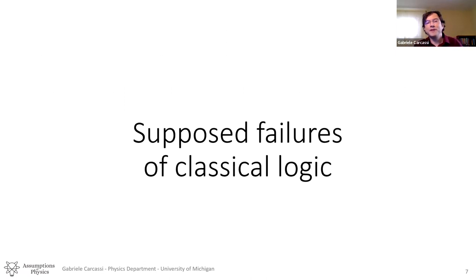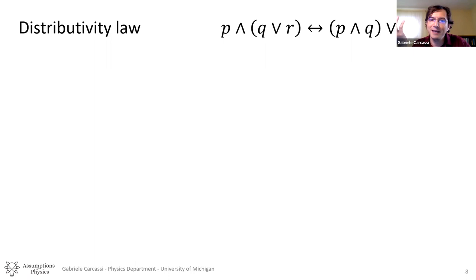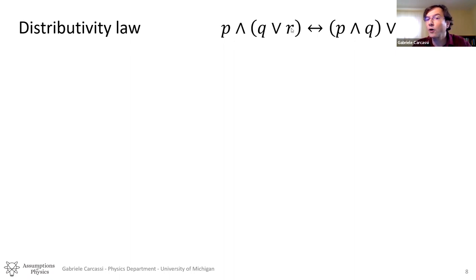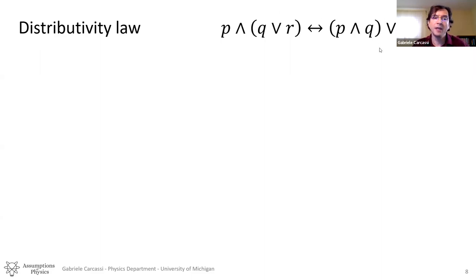Let's start with the supposed failure of classical logic. In classical logic, we have a distributive law that claims that if we have three statements P, Q, and R, then P and (Q or R) is equivalent to (P and Q) or (P and R). The claim is that in quantum mechanics, this logic fails.